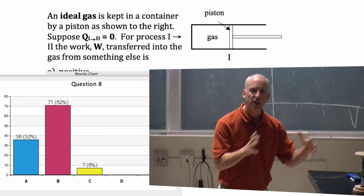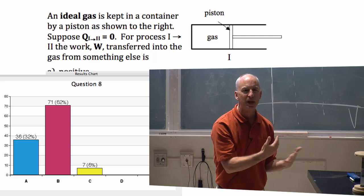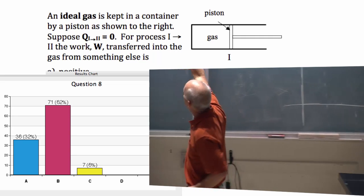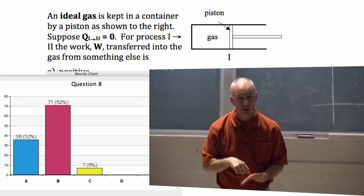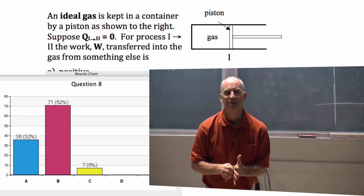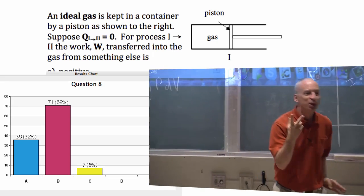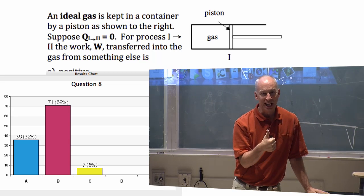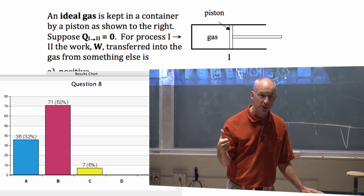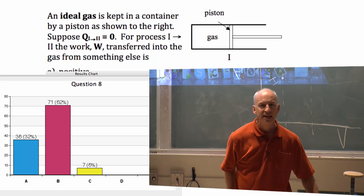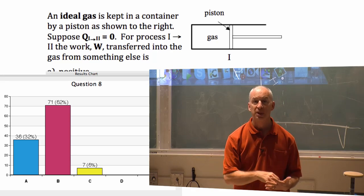So, if you say the gas is doing work on the other thing, then the other thing has a W that's positive, but the work energy transferred into the gas is the negative of that. I mean, I'm not sure if I'm... There are definitely two things. The other thing is gaining work energy, and the gas is losing work energy. So, the work energy transferred into the gas is negative because it's losing energy.